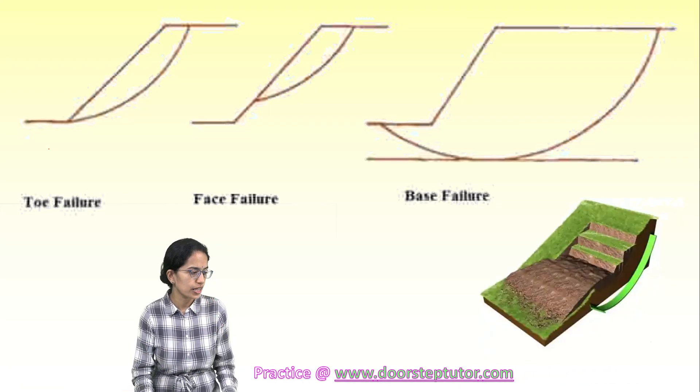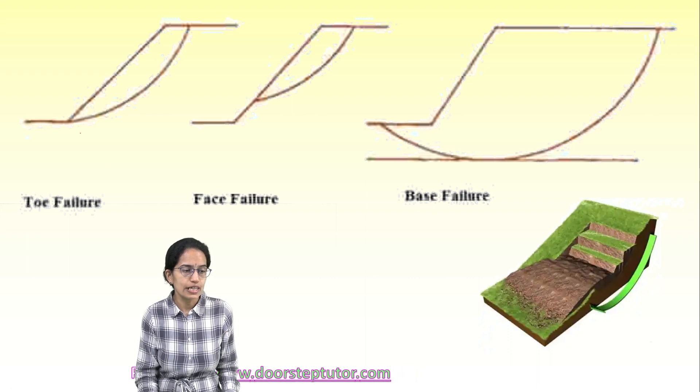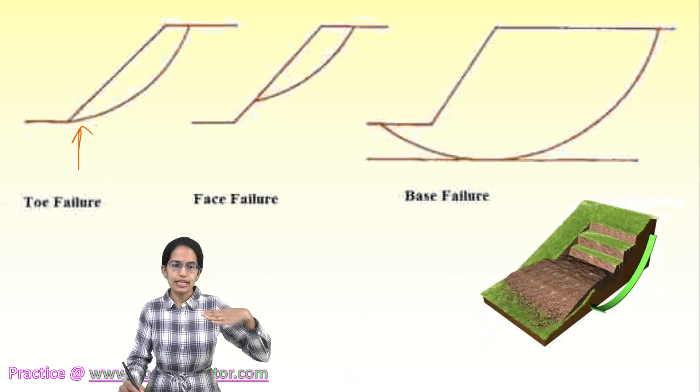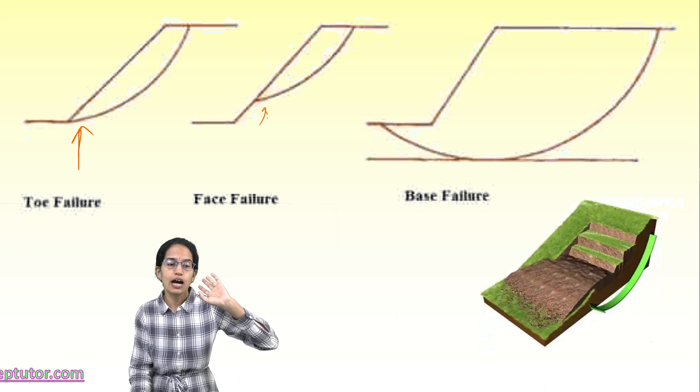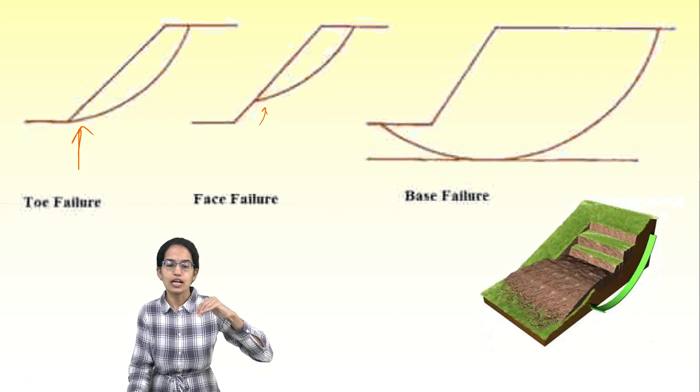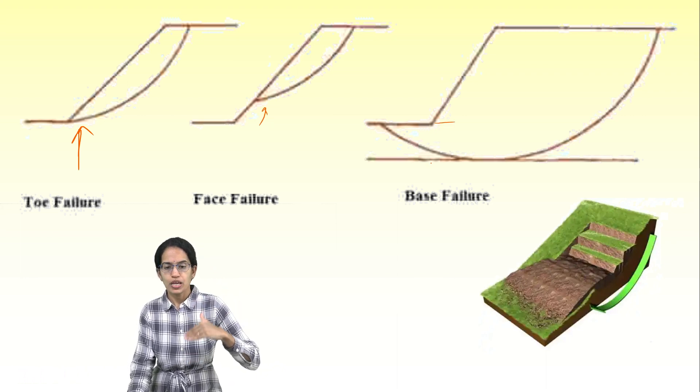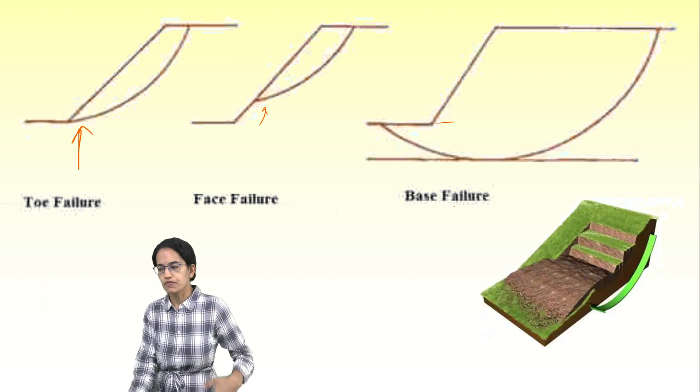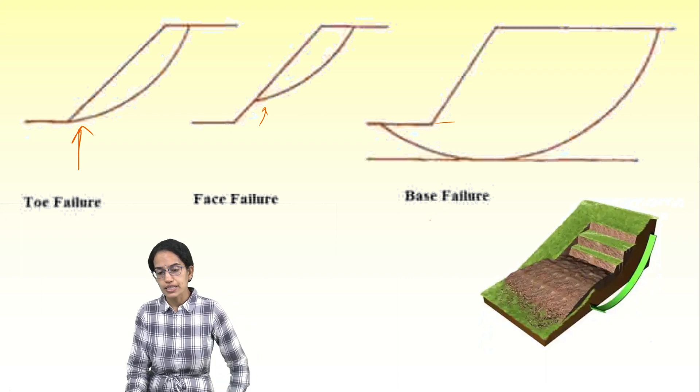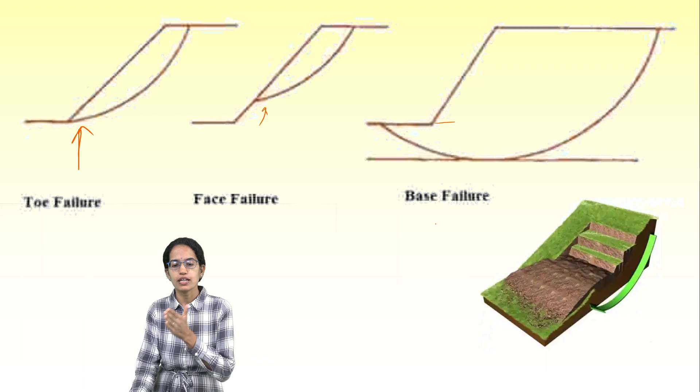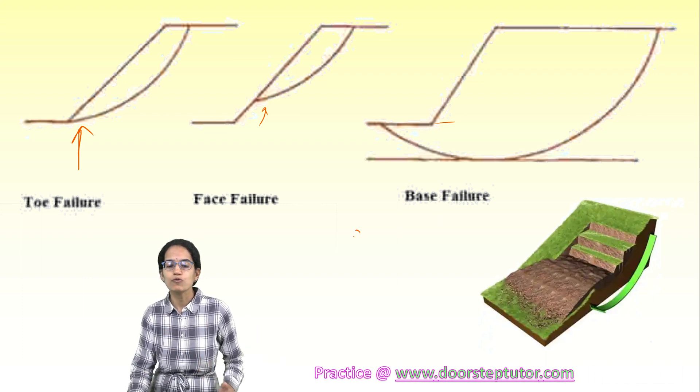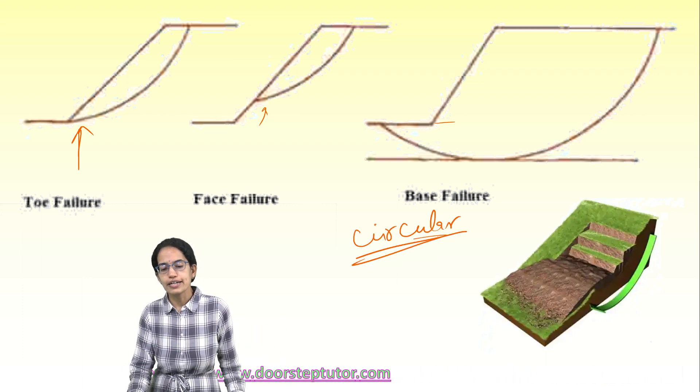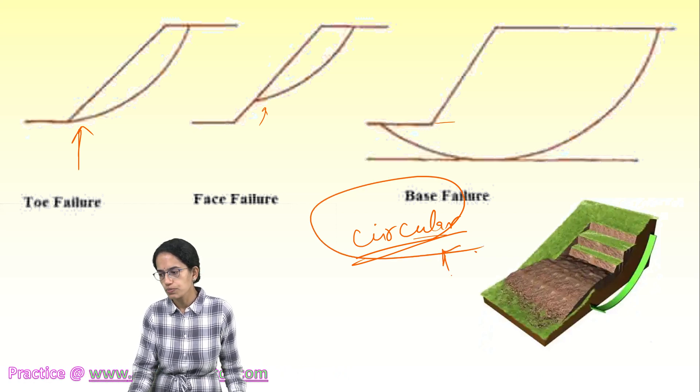There are three types of circular failures. Toe failure is at the base. Face failure occurs a little above the base. Base failure occurs below the toe. Toe failure, face failure, and base failure are three types of circular failures that can occur, and identifying the exact one is yet to be done.